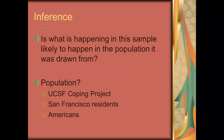Now let's talk about inference using the Pennebaker example. In inferential statistics, we ask: is what is happening in the sample likely to happen in the population it was drawn from? Pennebaker had a sample of 30 subjects and saw that more positive words were expressed at 12 months than one month. Will that happen in the population? We first have to ask which population — subjects from the UCSF coping project, all San Francisco residents, or all Americans? This is a question of external validity.